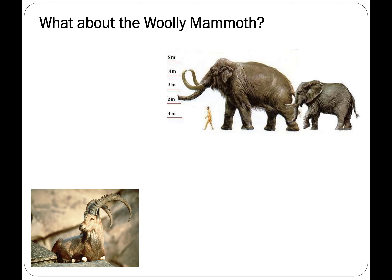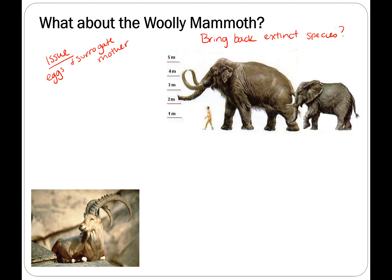Here's a way maybe we can bring back extinct species. For a woolly mammoth, you would have to have an egg and a surrogate mom. There's a lot of work going on recreating the woolly mammoth genome. The next closest relative would be an elephant, and you can see there's quite a size difference. Would an elephant be able to carry a woolly mammoth embryo or fetus? I don't know, but we've got lots of ideas.